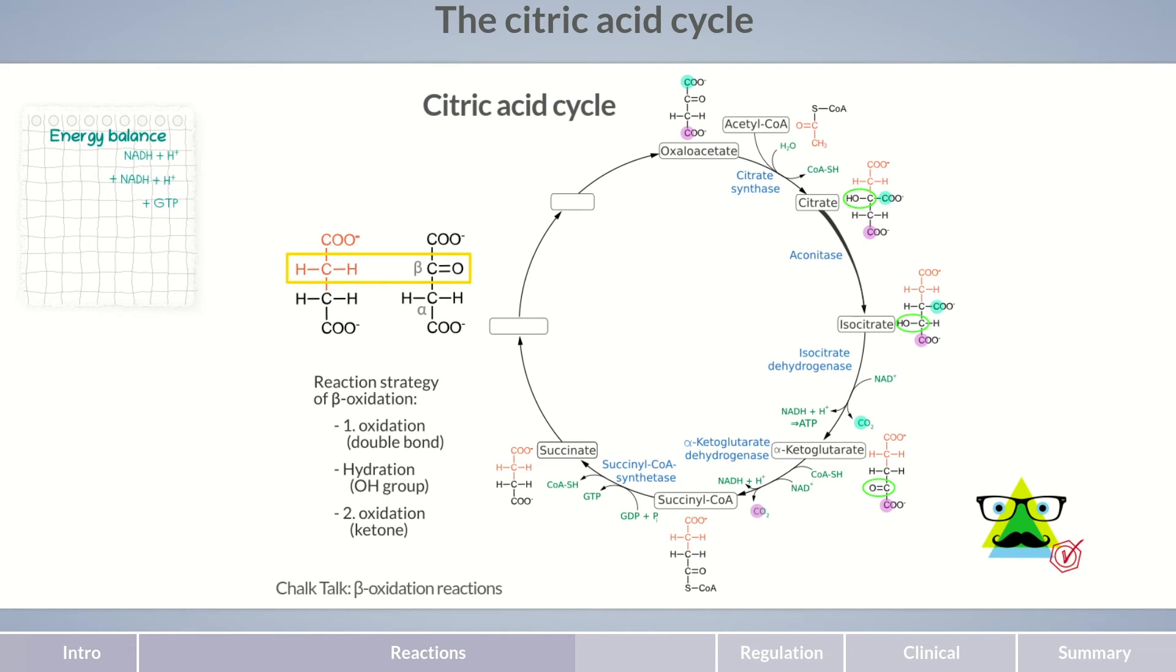Therefore, reaction step 6 leads to the formation of fumarate, which has a double bond. The reaction is catalyzed by succinate dehydrogenase. It transfers the electrons and protons released during the reaction to FAD and hereby to a protein of the electron transport chain.